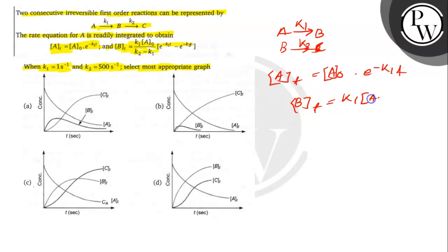K1 times [A]0 divided by (K2 minus K1), times (e to the power minus K1T minus e to the power minus K2T). This is the given equation for AT and BT.